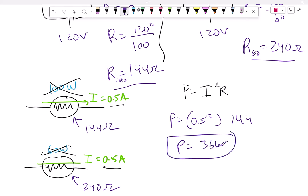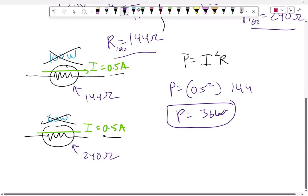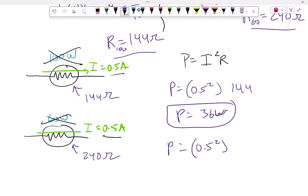So 36 watts is coming out of the originally 100 watt resistor. And then the next one, the power is again 0.5 squared, multiply by, in this case, 240. You barely have to calculate this. You know where this is going, right? So it's gonna be 0.5 squared multiply by 240. And I get 60.